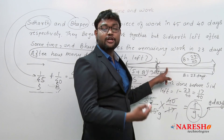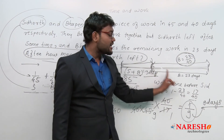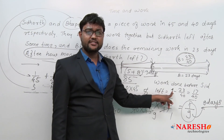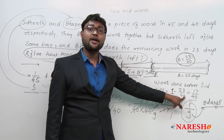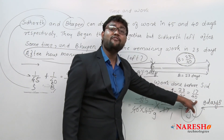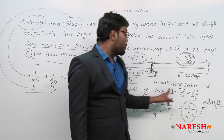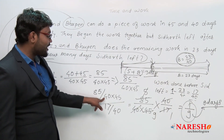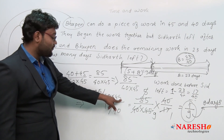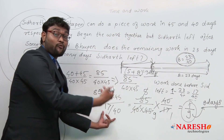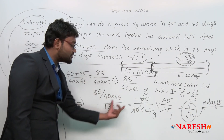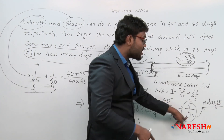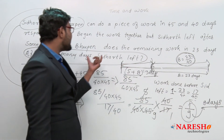After Siddhartha left, Bhupen worked for 23 days. Since work is always one single unit, from 1 we subtract 23/40 to get the work done before Siddhartha left: 17/40. Dividing 17/40 by the combined one day's work 85/(40 × 45), we get 1/9, and reciprocating gives 9 days. So after 9 days, Siddhartha left.